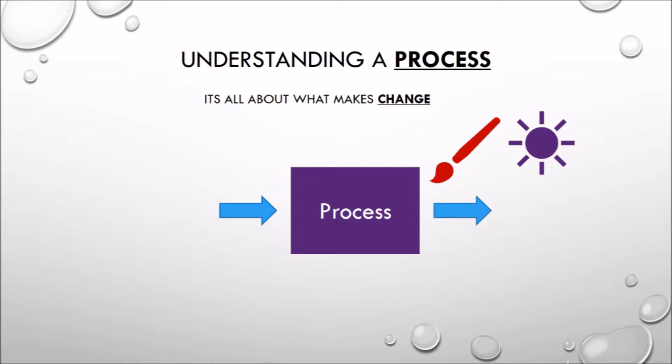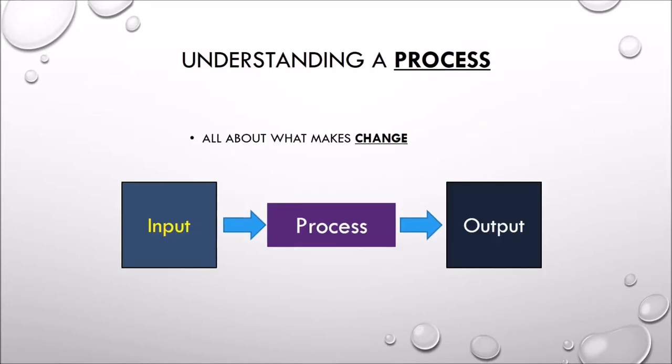The process is what changes something to something different. The input and output are things that feed in and feed out. Please make sure that you use the correct symbols when you do that. I always think of the word 'process' linked to the word 'proceed.'